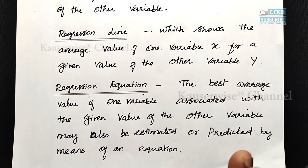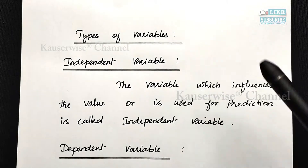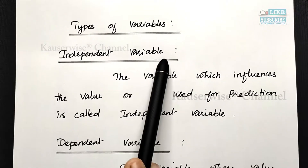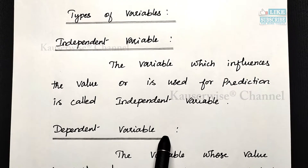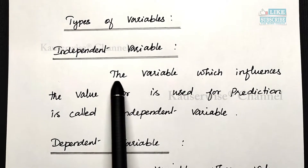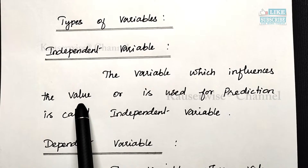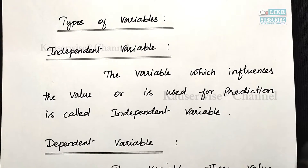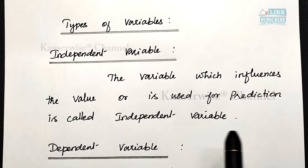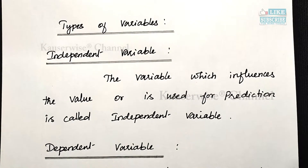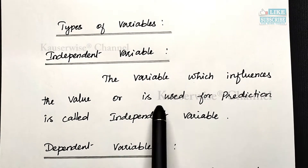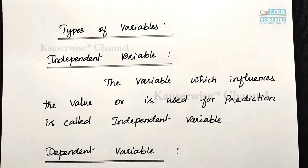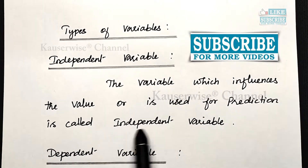There are two different types of variables in regression analysis. The first one is the independent variable and the second one is the dependent variable. The independent variable is the variable which influences the value or is used for prediction. For example, if we are going to find out the value of x based on y, then y is used for prediction, so y is called the independent variable.